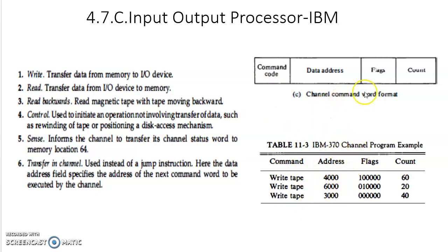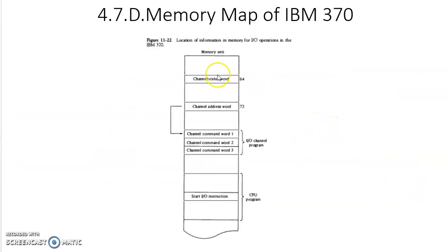Here are some examples of channel command words (CCWs). Write tape means the CPU is sending data to the magnetic tape at a specified address, with a specified number of bytes being transferred. The address and byte count change per command. These examples show how the CPU uses the I/O processor to access I/O devices like magnetic tape. The data bytes are available in memory and are transferred to the I/O device. This is also the memory map of the IBM 370, where all channel status words and address words are stored.